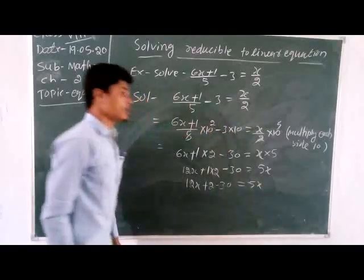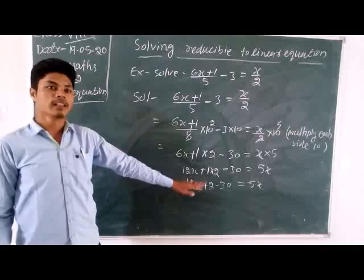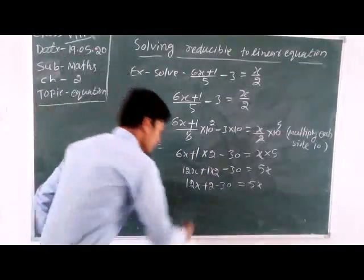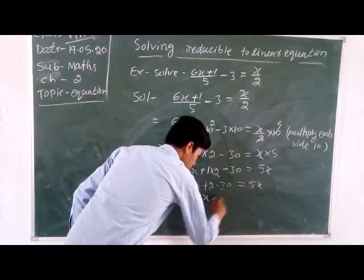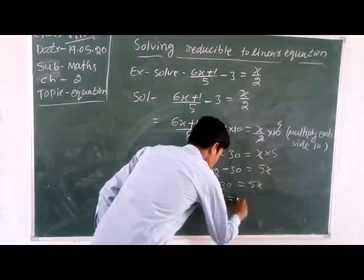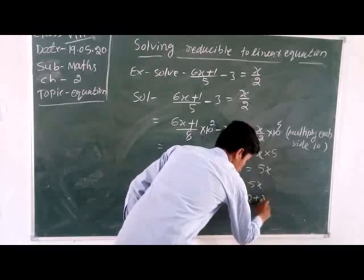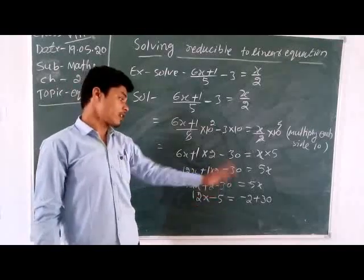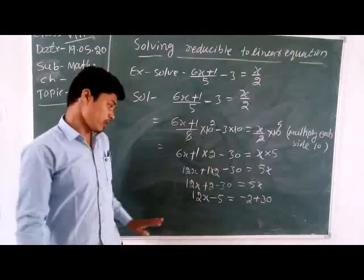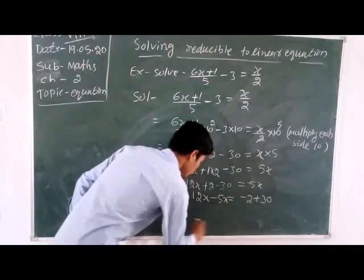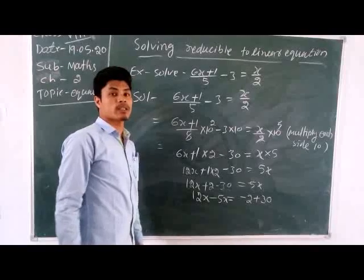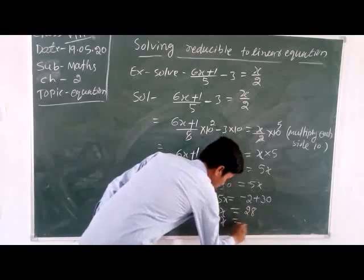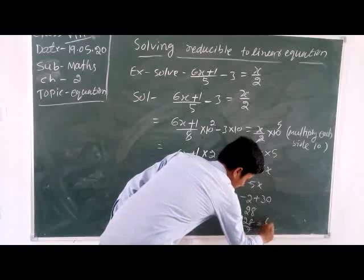12x plus 2 minus 15 equals 5x. Now, both sides have variables, so we use the transpose method — move numerals to one side and variables to the other side. So: 12x minus 5x equals minus 2 plus 30. When we transpose, the sign also changes: plus transposes to minus, minus transposes to plus. So 7x equals 28, and x equals 28 divided by 7, which equals 4.